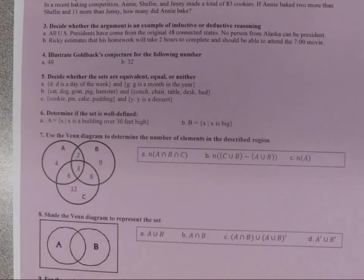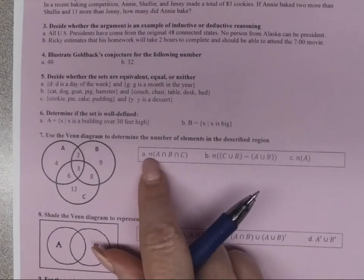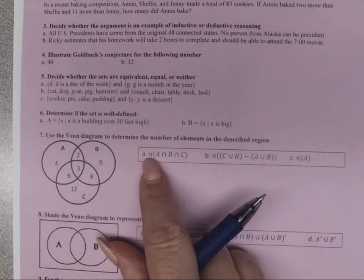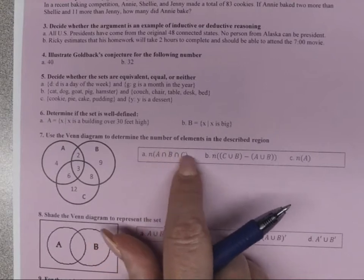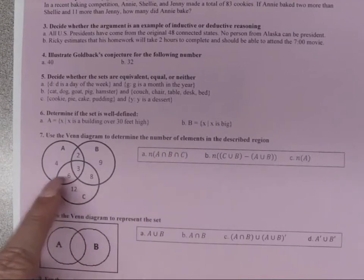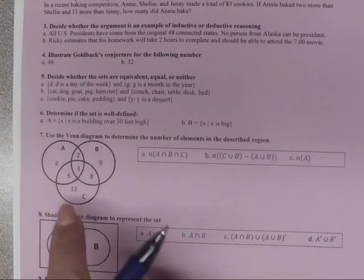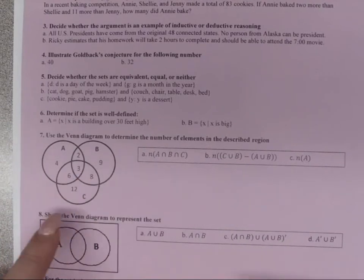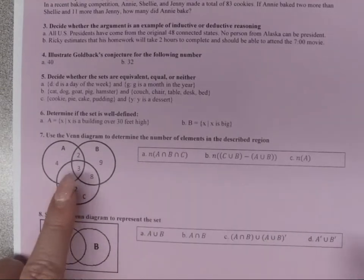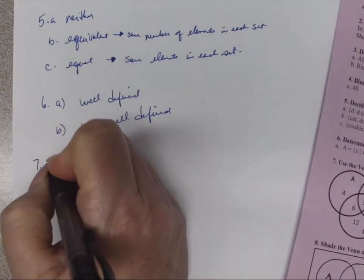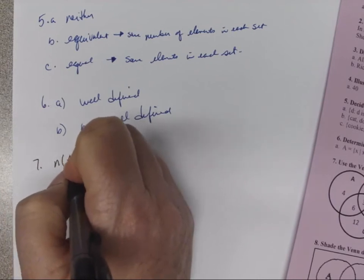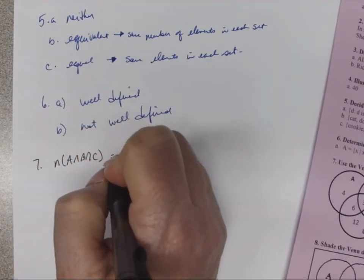Question 7 asks us to use the Venn diagram to determine the number of elements in described regions. For Part A, N of A intersect B intersect C: we look at what is actually in the intersection of all three circles — the value is 3. So N(A ∩ B ∩ C) = 3.